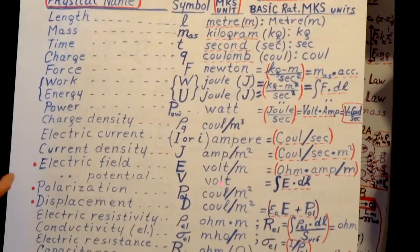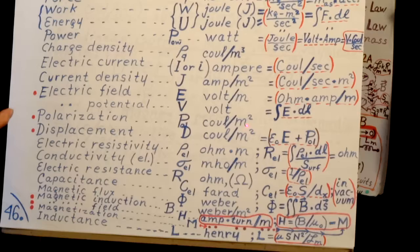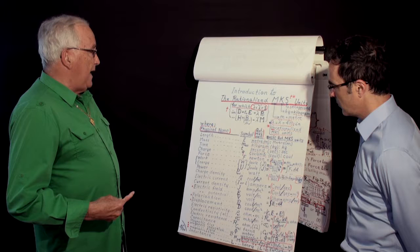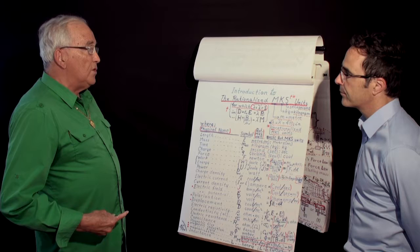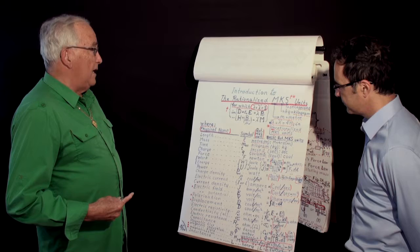Electric potential, we use V for volts. Polarization unit, it's Coulomb per square meter. Coulomb is the rationalized MKS unit Coulomb. These are symbols used for all kinds of units. And this is the name in a rationalized MKS unit.